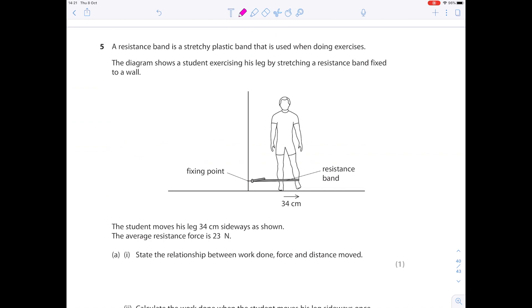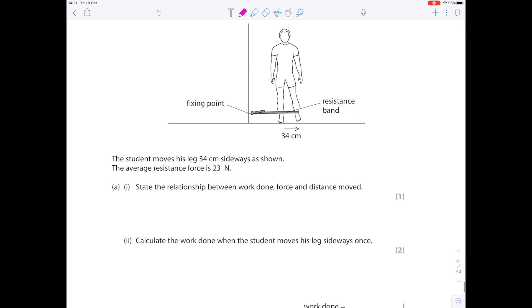A resistance band is a stretchy plastic band that is used when doing exercises. The diagram shows the student exercising his leg by stretching a resistance band fixed to a wall. The student moves his leg 34 centimeters sideways as shown. The average resistance force is 23 newtons. State the relationship between work done, force and distance moved. Work done is force times distance.